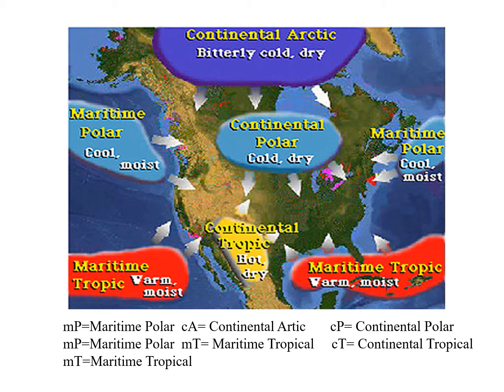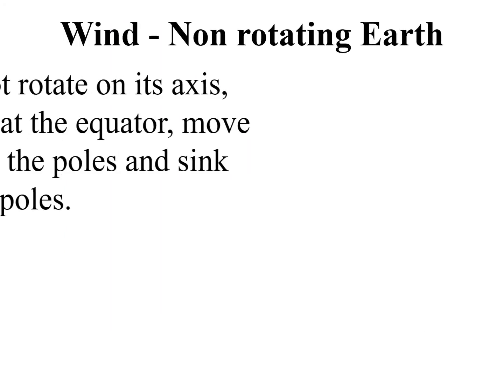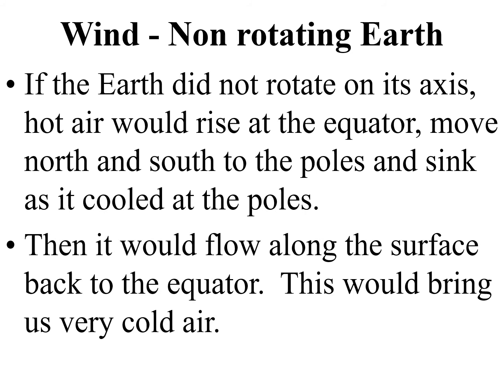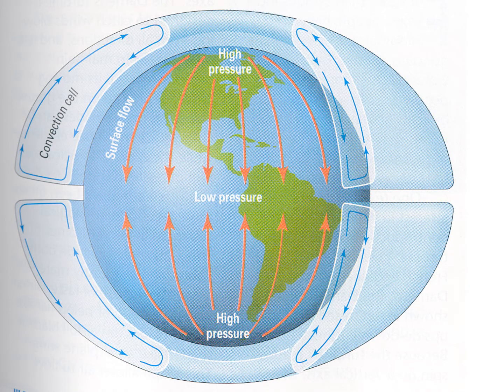Weather has a whole lot to do with the interaction between air masses. If the earth wasn't rotating, this would be so easy — hot air would just rise at the equator, move north and south to the poles, and sink as it cooled at the poles, then blow along the surface back to the equator. Here the air would always be coming from the north and it would always be cold. Isn't it good the earth is, in fact, rotating?